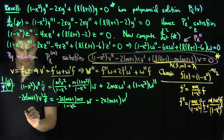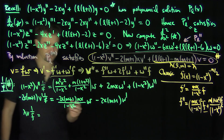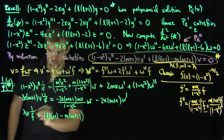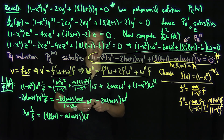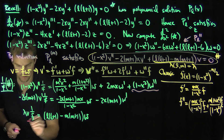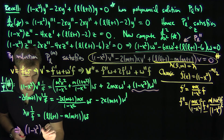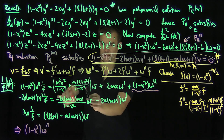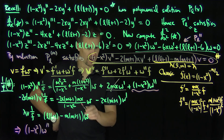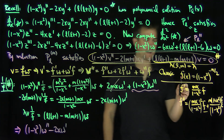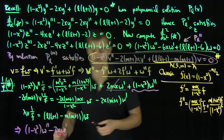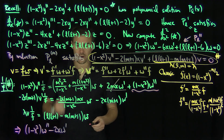Gathering all terms: the only w'' term is (1 - x²)w''. For w' terms, I have +mx and -2mx, which cancel, leaving -2x·w'. And indeed that's exactly what we expect when putting things into self-adjoint form — we've followed the algorithm for self-adjoint (Sturm–Liouville) operators.